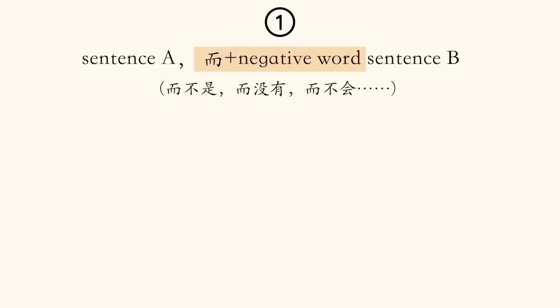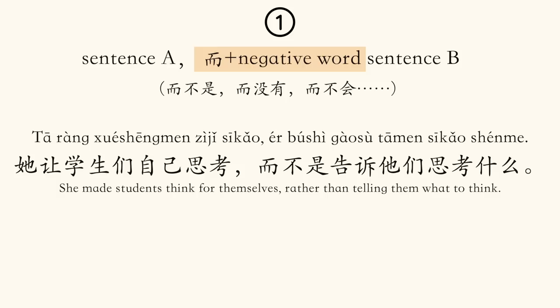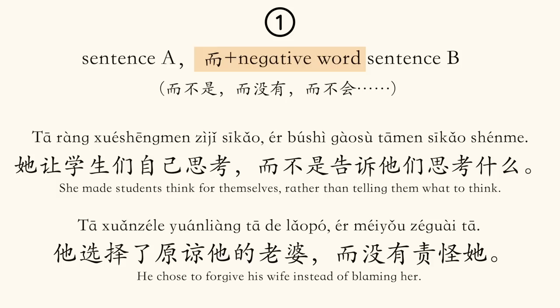I know it's a bit abstract, but don't worry. Let me elaborate with the four structures of 而. Number one: Sentence A, comma, 而 plus a negative word, Sentence B. For example: 她让学生们自己思考，而不是告诉他们思考什么。 她选择了原谅她的老婆，而没有责怪她。